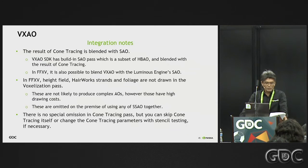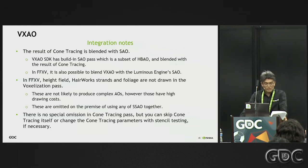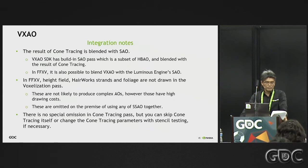VXAO has a complete separation between the voxelization path and the contouring path. The voxelization path provides light occluders for AO, and the contouring path receives AO. You can choose which objects to process in each pass according to your purpose and GPU budget. In Final Fantasy XV, height field, HairWorks strands, and foliage are not drawn in the voxelization path — these are unlikely to produce complex AOs but have high drawing cost, so they're omitted on the premise of using SSAO together. There is no special omission in the contouring path, but you can skip contouring or change parameters with stencil testing if necessary. Think about your VXAO usage carefully before integration.